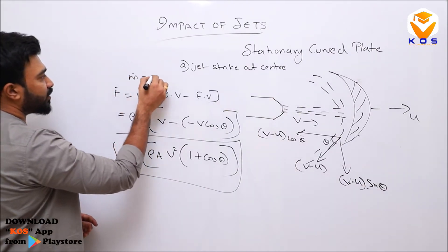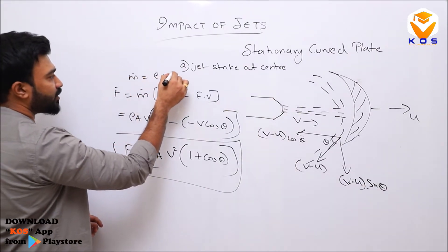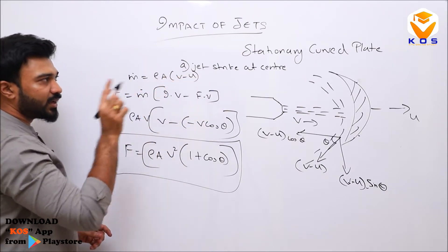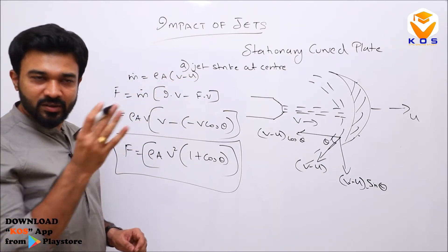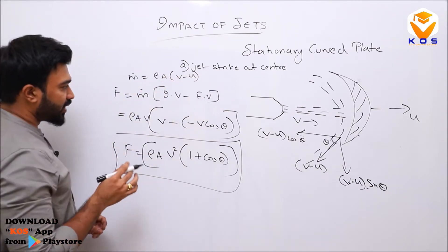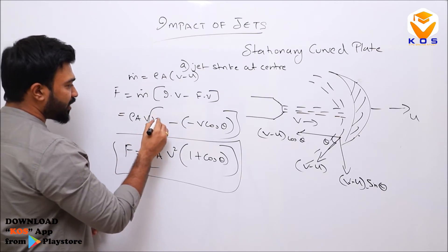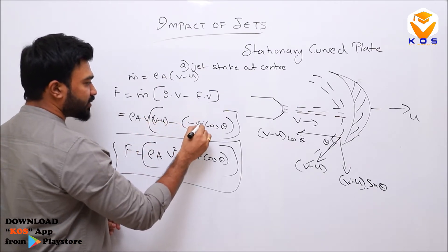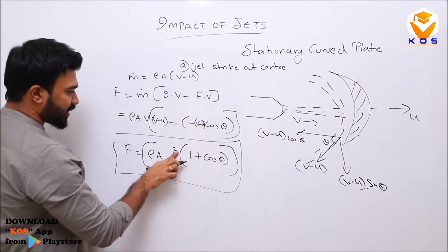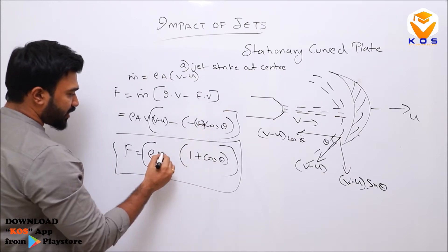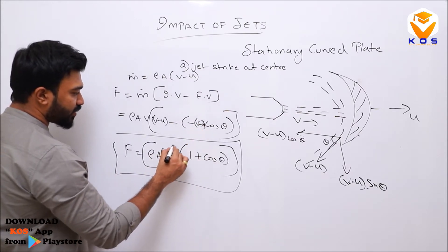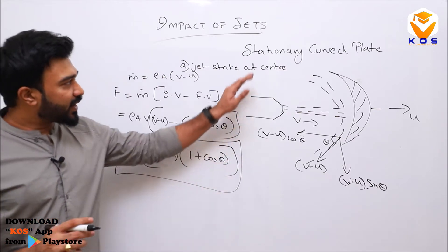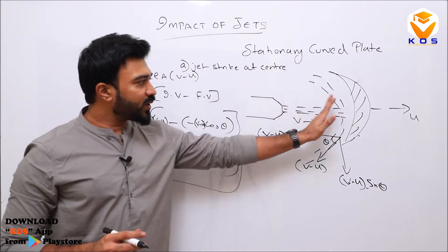Mass flow rate ṁ is equal to ρA(V−u), because the plate is already moving at velocity u. So the initial velocity will be V−u, and the force becomes ρA(V−u)²(1+cosθ).